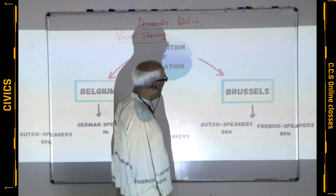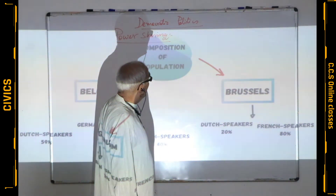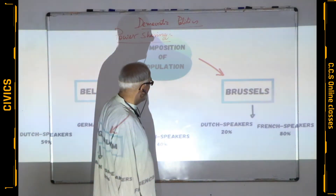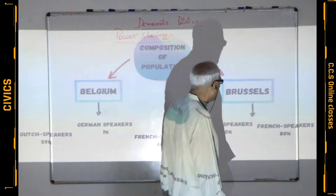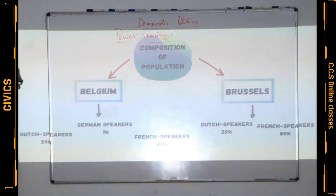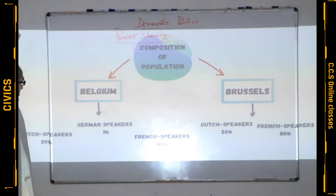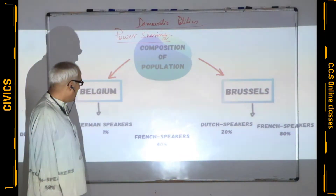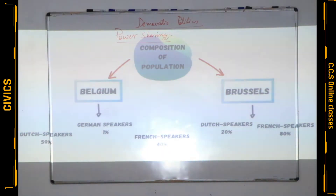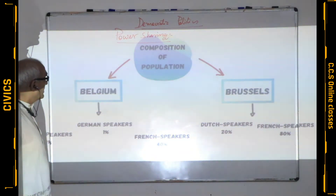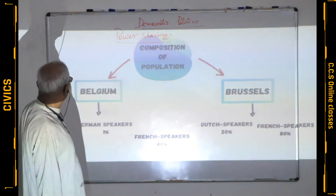The capital of Belgium, Brussels, has a different condition: Dutch speaking 20% and French speaking 80%. So in Brussels, French are in majority and Dutch are in minority. But in the whole country, Dutch are in majority and comparatively the French people are in minority. This is the linguistic diversity in Belgium.